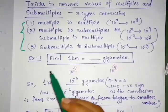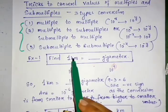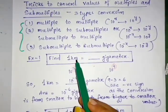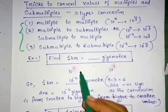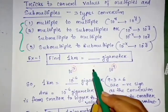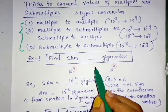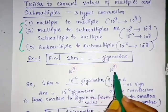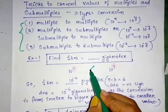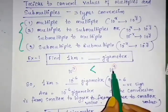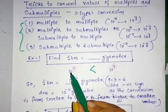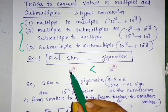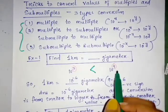So if this question is asked, first write down the values of 1 km and 1 gigameter. Now check which one is greater. Here 10 to the power 3 is smaller than 10 to the power 9. This is bigger quantity and this is smaller quantity. The smaller quantity is converted into a bigger quantity.